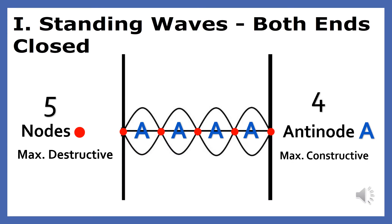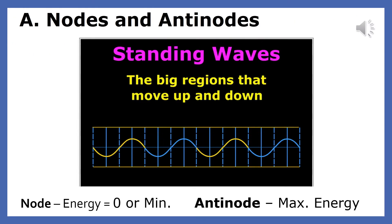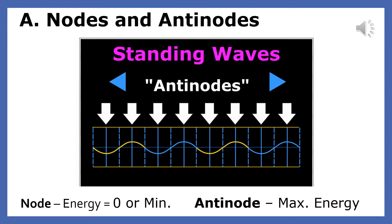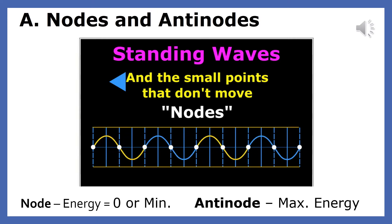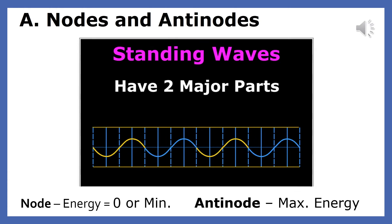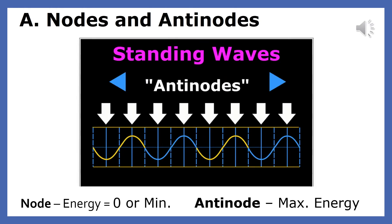This standing wave is two wavelengths long. It contains four antinodes and five nodes. There's always one more node than antinode. To review the two major parts of a standing wave: the part of the wave that moves up and down is called the antinode. The antinode is created by constructive interference and has maximum energy. The node is created by destructive interference, and it's the part of the wave that has minimum or no energy at all.